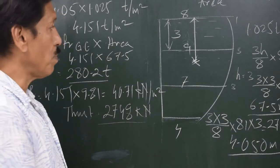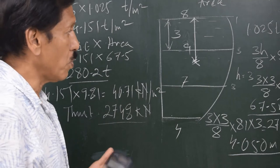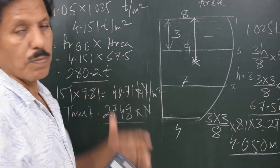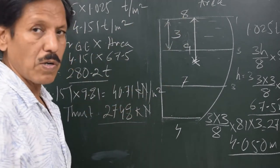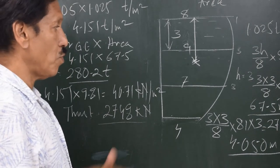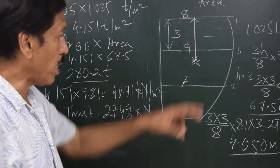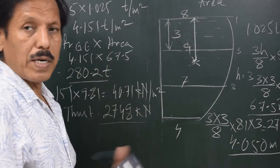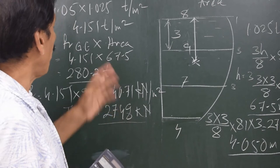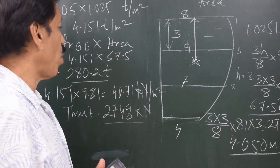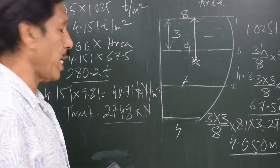The 8-meter ordinate was taken as the first ordinate so we automatically obtained the depth of the geometric centroid from the water level. To find thrust, first find pressure at the geometric centroid: depth × density, then multiply by 9.81 for kilonewtons. Pressure at geometric centroid is 4.151 tons per square meter or 40.71 kilonewtons per square meter, and the thrust is 280.2 tons or 2748 kilonewtons.